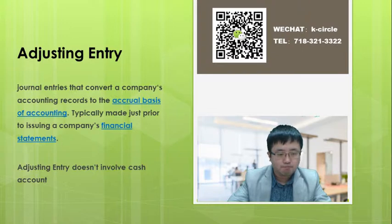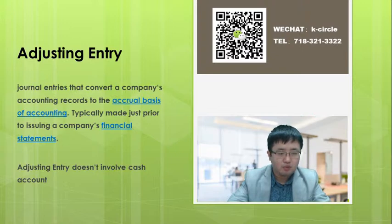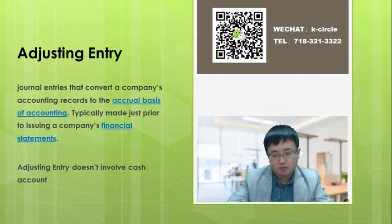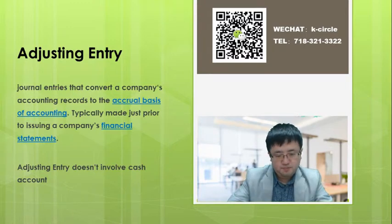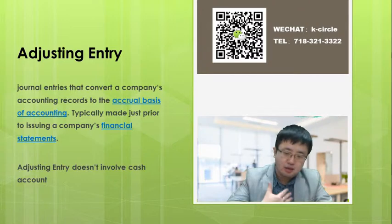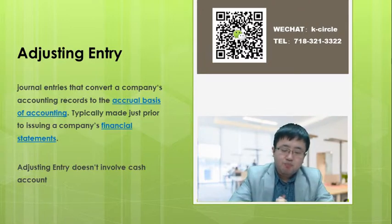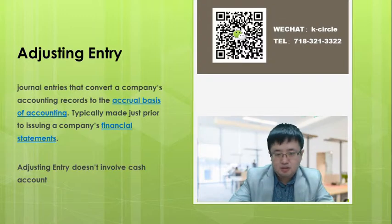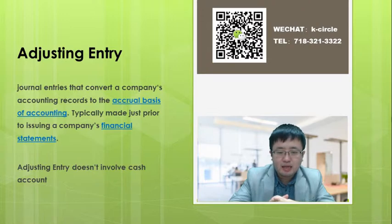First, let's start with accrual revenue. Accrual revenue is essentially an application of the US GAAP principle, which stands for Generally Accepted Accounting Principles. A key step to understanding accrual revenue is grasping the major difference between revenue and cash. The adjusting entry is basically the journal entry that converts a company's accounting records to the accrual basis versus the cash basis.